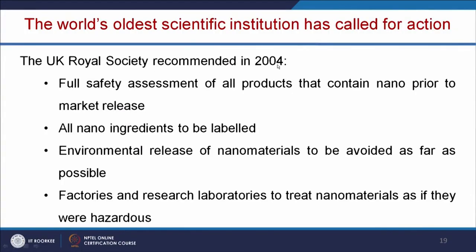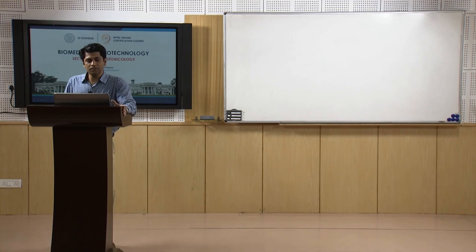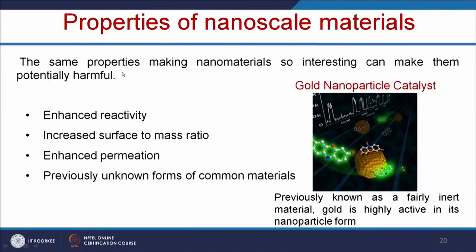The UK Royal Society recommended in 2004 that there should be full safety assessment of all products containing nano prior to market release, all nano ingredients should be labeled, environmental release of nanomaterials should be avoided as far as possible, and factories and research laboratories should treat nanomaterials as if they were hazardous. The same properties making nanomaterials so interesting — enhanced reactivity, increased surface area to mass ratio, enhanced permeation, and previously unknown forms of common materials — can also make them potentially harmful.